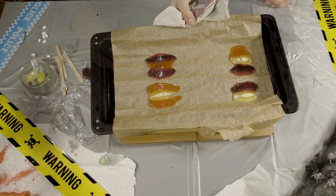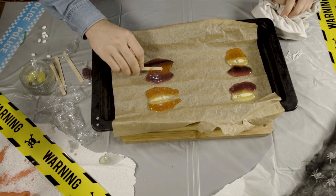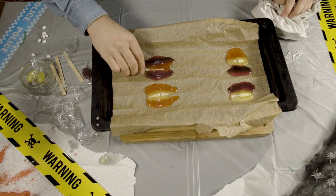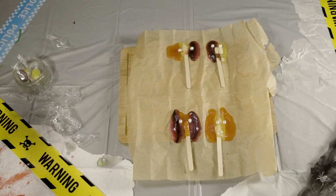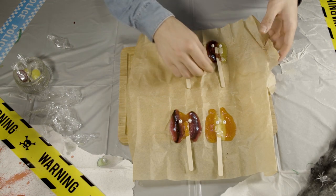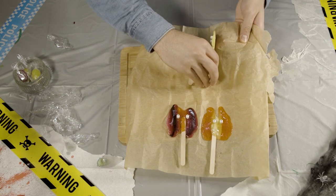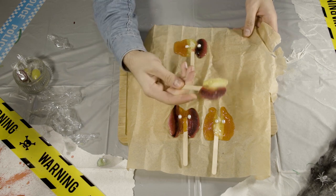As soon as you take them out, place a lollipop stick at one end, rolling it to coat it with melted candy. Let the suckers dry completely on the tray. Then carefully remove the paper from the back, and voila, you're a certified confectioner.